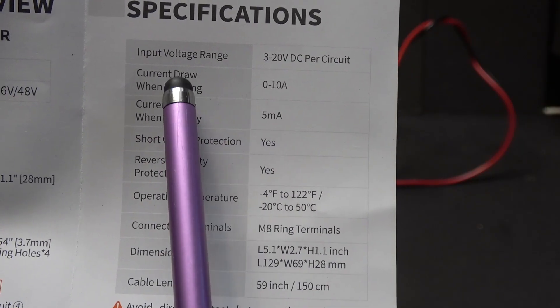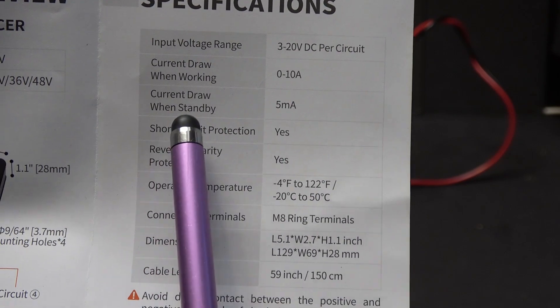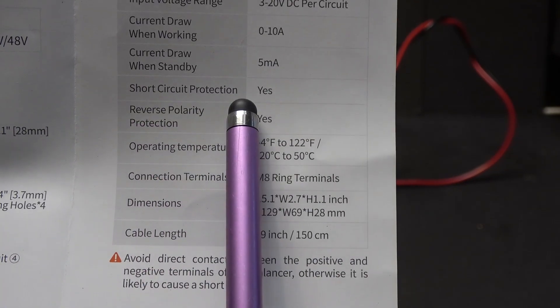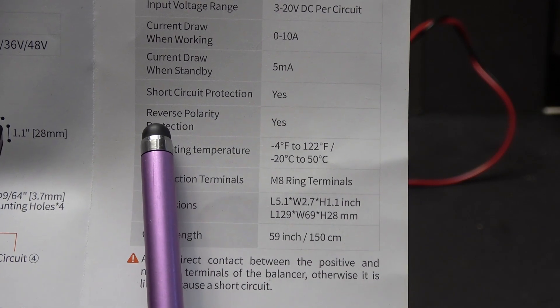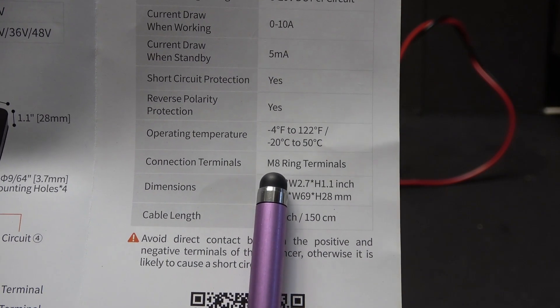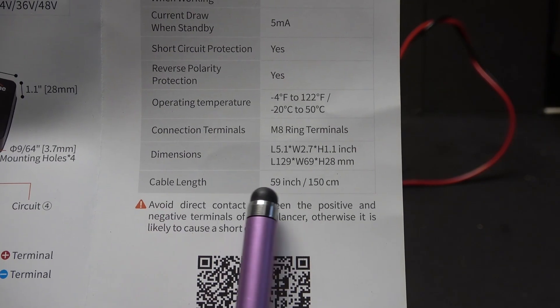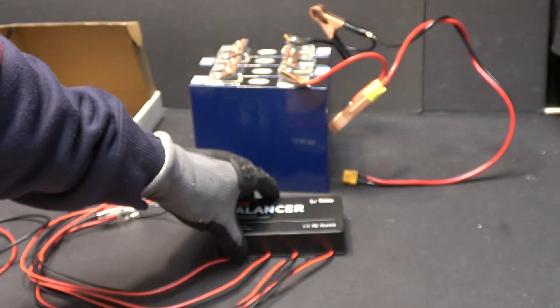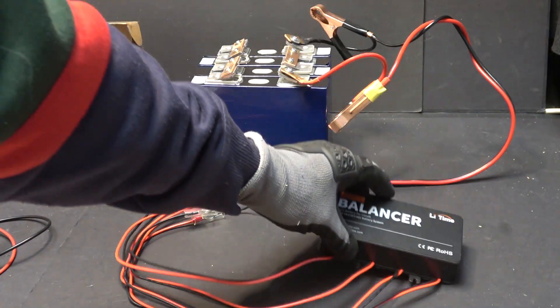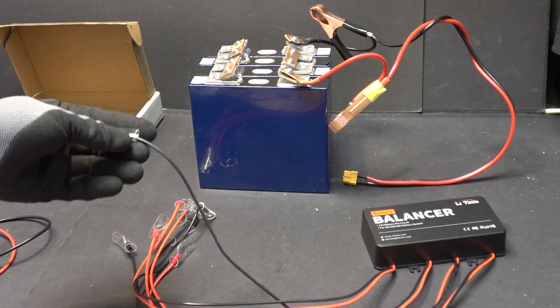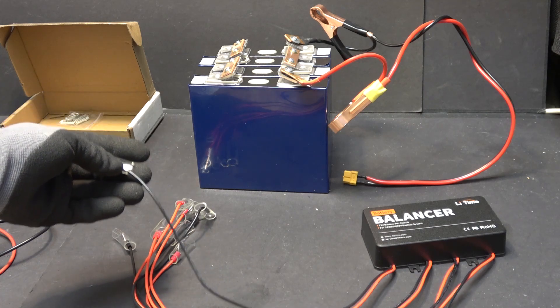Current draw when working up to 10 amps. Standby 5 milliamps. It has short circuit protection and reverse polarity protection. It has ring terminals and size is M8 screws. Cable length 59 inch. I don't know where this is from because the cable length on this unit, from here all the way to the end, for each wire is only 18 inches.